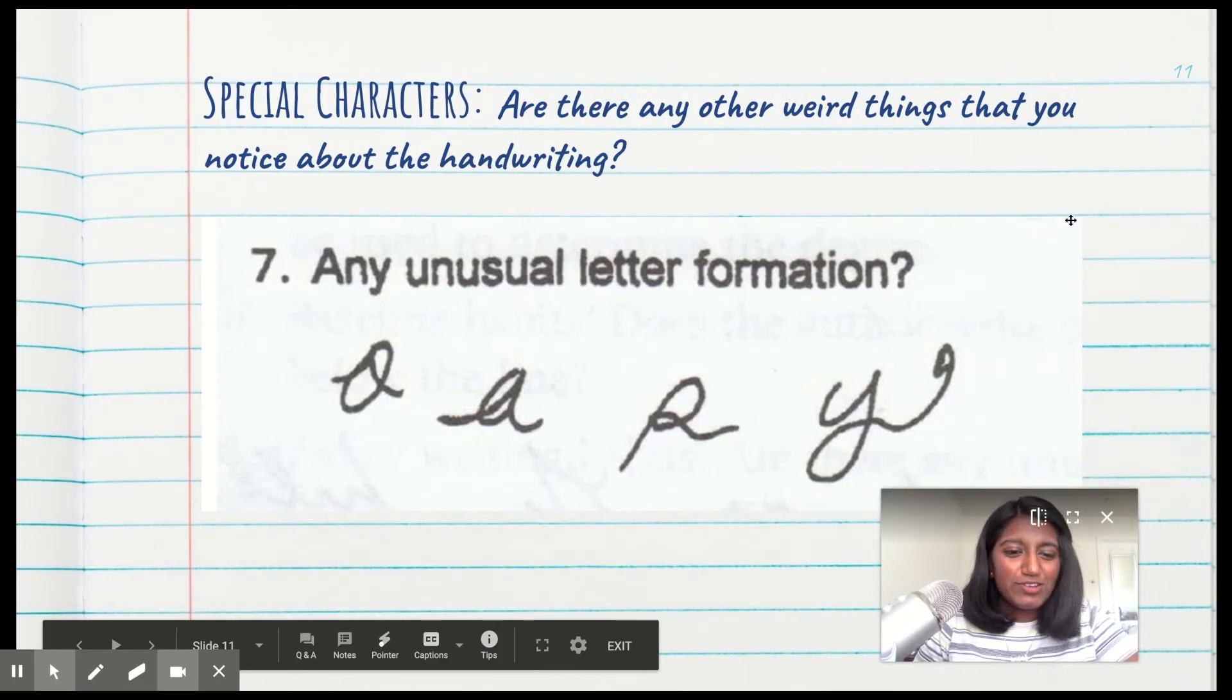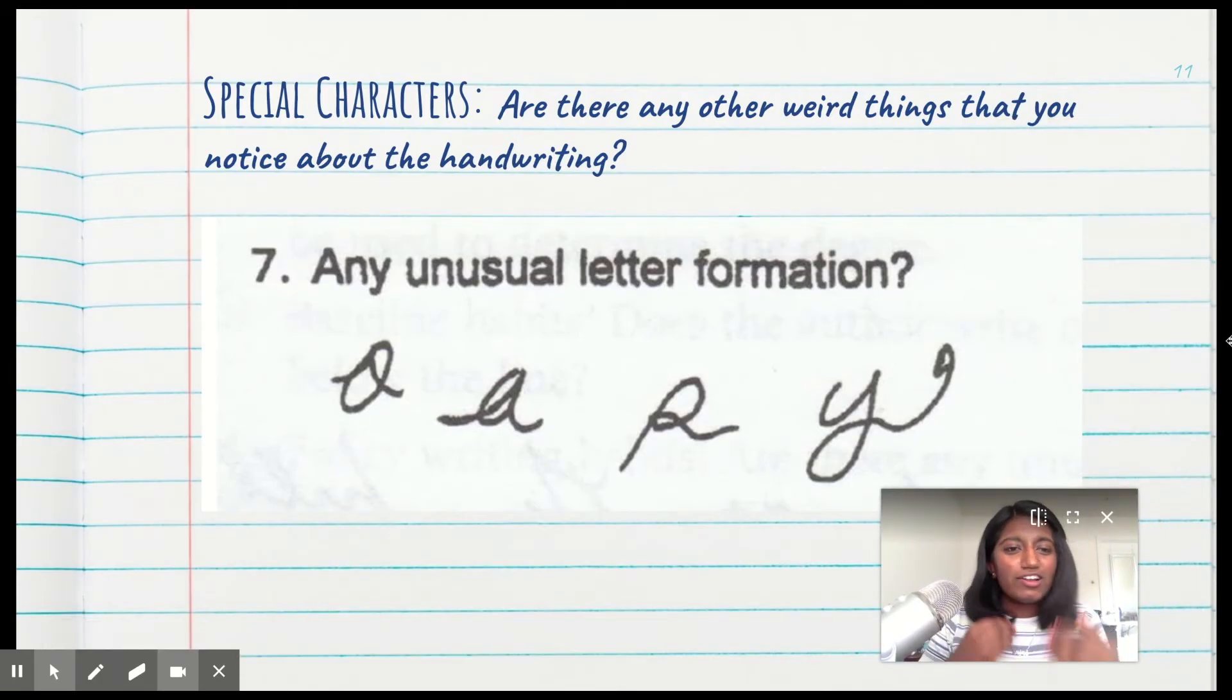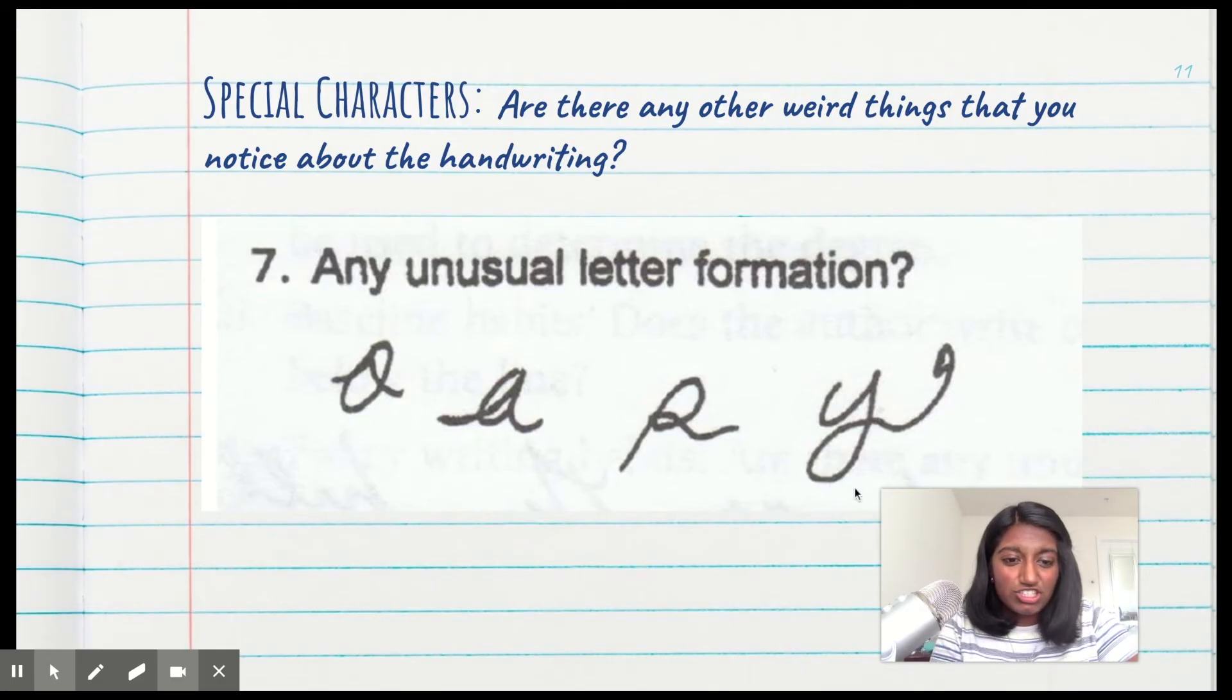And finally, last but not least, you have special characters. Are there any weird things that you notice about the handwriting? Here, this Y has a giant curlicue at the end. That's pretty weird. Some people, when they write seven, put a little line through the middle. That's a special character for sure. One thing that I do when I am writing Ls at the end of my word, like removal or carnival, that one L will be cursive while all the other Ls will be print. That's something pretty weird about my handwriting that makes it distinct from anyone else's, and that's going to be a good thing to look for when comparing handwriting samples.